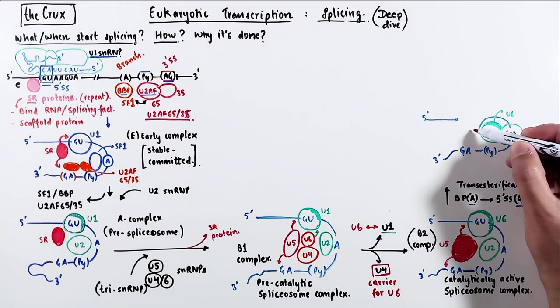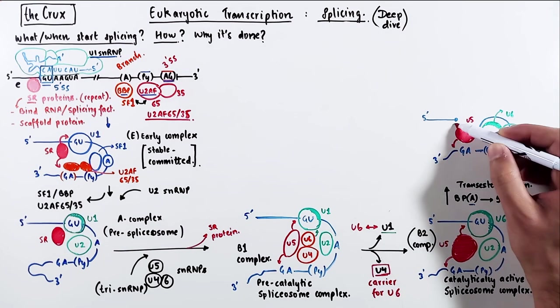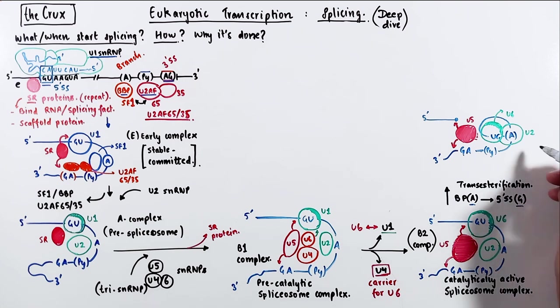Now if the exon is cut off at one end, you don't want to lose it. So the U5 snRNP keeps the exons in the complex, while still interacting with U6 and the downstream exon. I feel like U5 snRNP is the unsung hero of this entire splicing process.